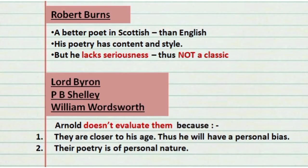The next poet analyzed is Robert Burns, a Scottish poet. Arnold thinks Burns is a better poet in Scottish than in English. His poetry has content and style, but like Chaucer, he lacks seriousness. Thus, Burns is not considered to be a classic.